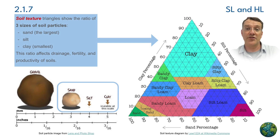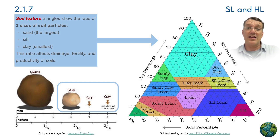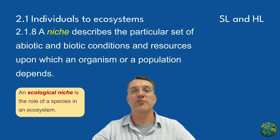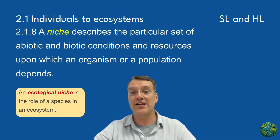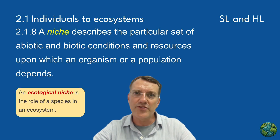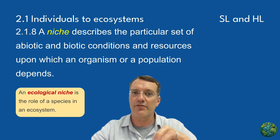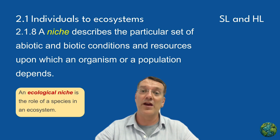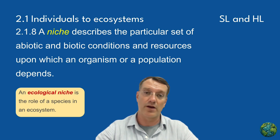affects water retention, nutrient availability for plants, and how quickly the soil drains or evaporates — all of which affect the plants that grow there. All these factors contribute to defining a species' ecological niche: the specific set of conditions and resources required for its survival and reproduction.